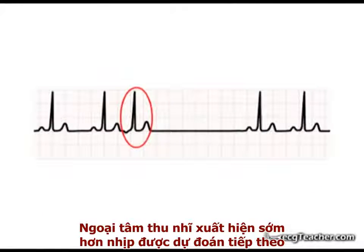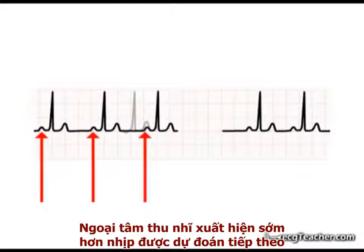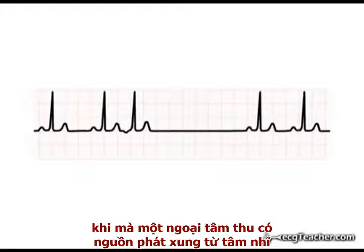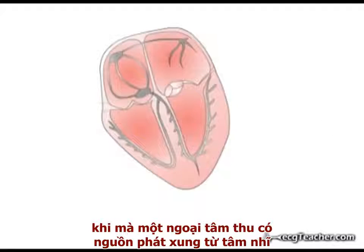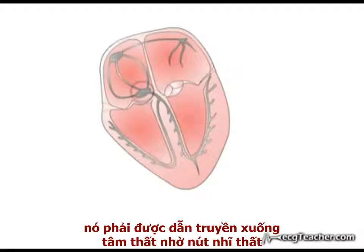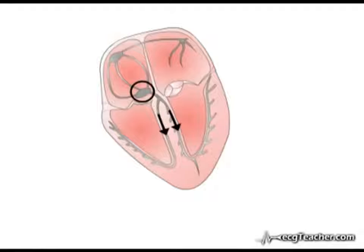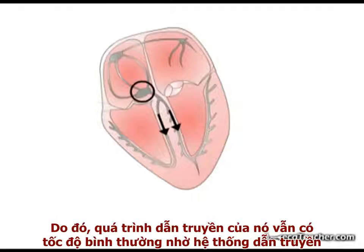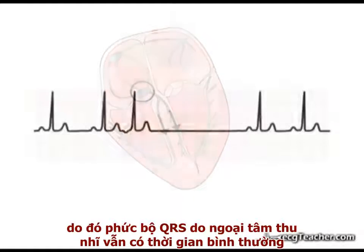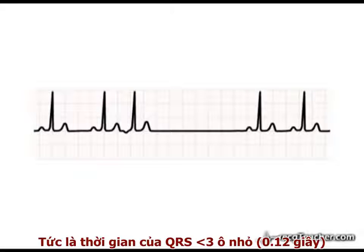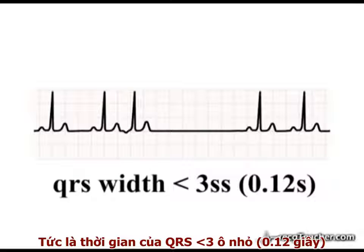On the ECG, the premature atrial contraction occurs earlier than the next predicted sinus beat. Also, and very importantly, as the ectopic discharge originates in the atrium, it must be transmitted into the ventricles by the AV node, and consequently into the ventricular conducting system. Therefore, as the wave is transmitted at normal speed around the chambers by the conducting system, the QRS complex associated with an atrial ectopic is of normal duration, that is less than three small squares in width.